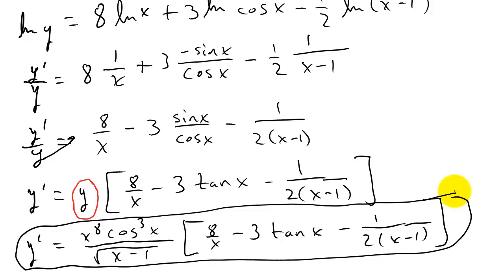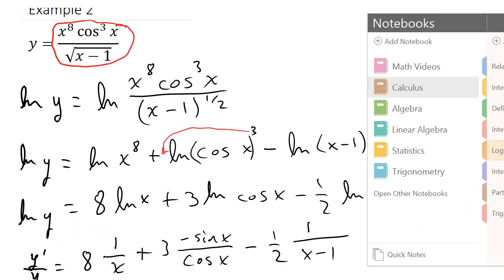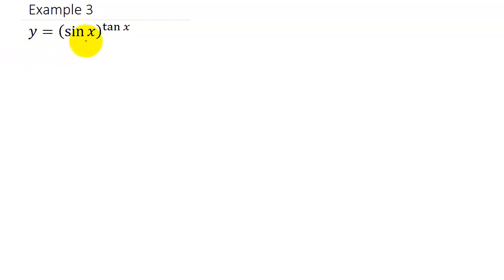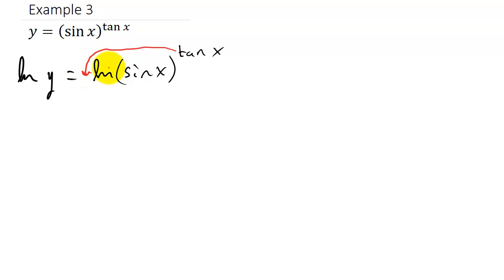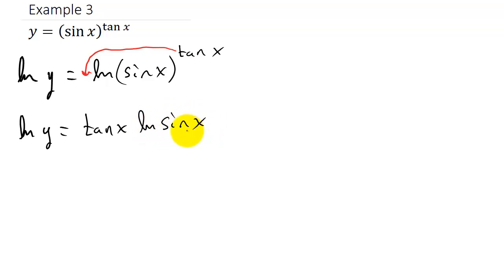So let's take a look at one more. Here we have y equals sine x to the tangent x. So let's use logarithmic differentiation — I'm going to take the natural log of both sides. This is the natural log of sine x raised to the tangent x, and our logarithmic property says we can take this exponent and bring it down in front: natural log of y equals tangent x times natural log sine x.